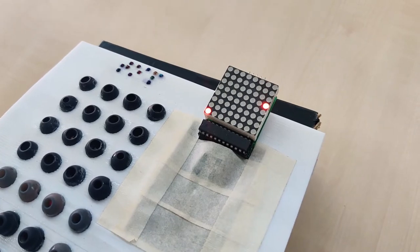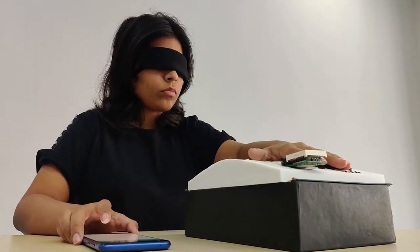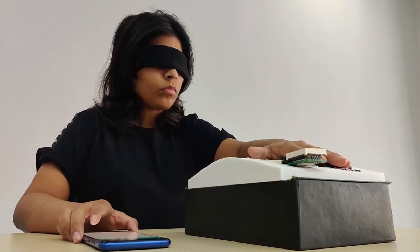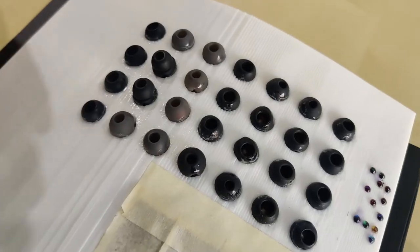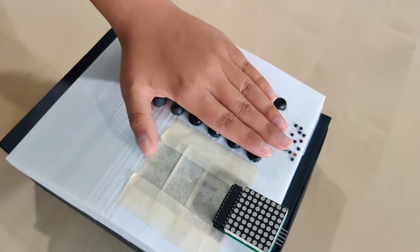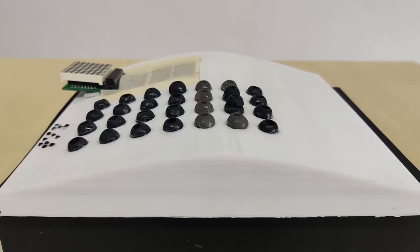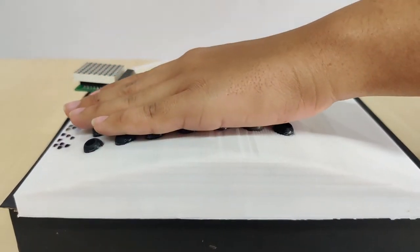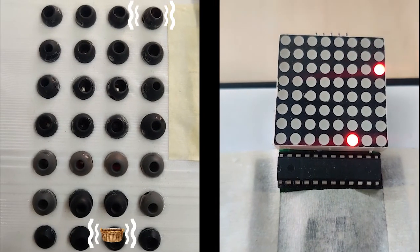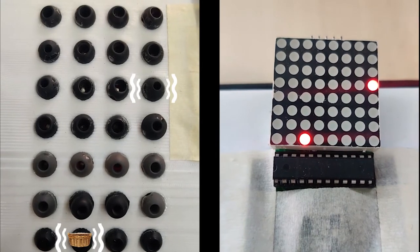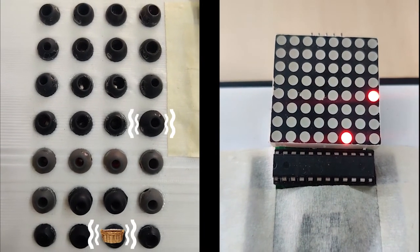The vibration motors will vibrate in sync with the LED screen. The player will place their hand on the grid in a way that aligns their four fingers with the four columns of the grid. In this way, the player will be able to feel the falling eggs, which are the columns, and the basket, which is the bottom-most row.